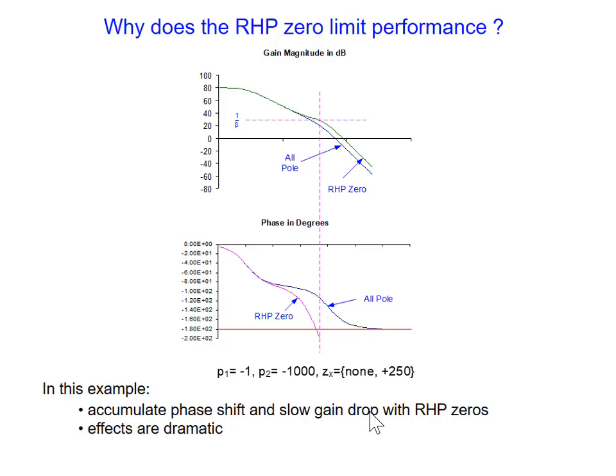Looking at the Bode plot from last time: with an all-pole amplifier, gain comes down like this and phase looks like this. Then we had the right half plane zero which boosted the gain up. Boosting the gain would generally help with phase margin or compensation, but unfortunately that right half plane zero made the phase drop too fast. The more rapidly dropping phase compromises the frequency response, and the drop in phase more than offset the gain boost.